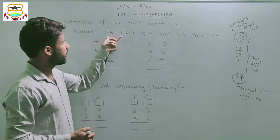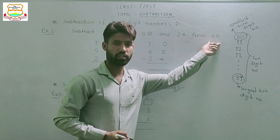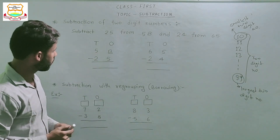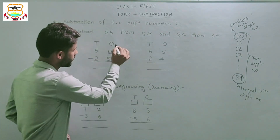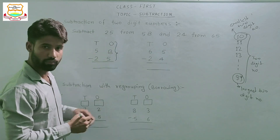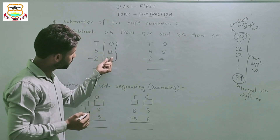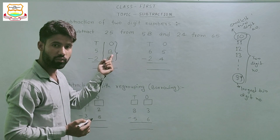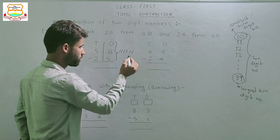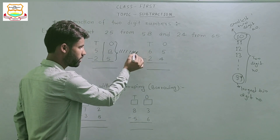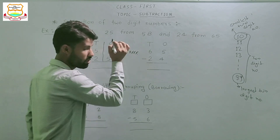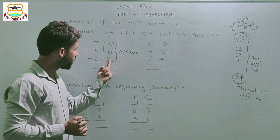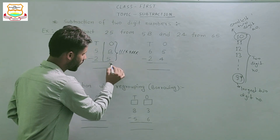Now the example is: subtract 25 from 58. First of all, we subtract ones from ones. This is the ones column — subtract 5 ones from 8 ones. Draw 8 strips in front of 8, then cut 5 strips: 3, 4 and 5. How many sticks are remaining? Count: 1, 2 and 3. Means 8 minus 5 equals 3.